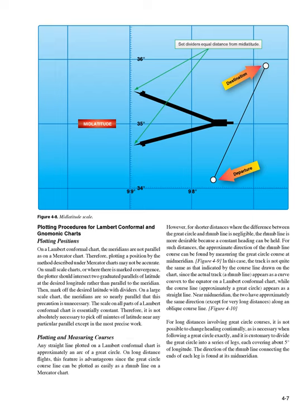The scale on all parts of a Lambert conformal chart is essentially constant. Therefore, it is not absolutely necessary to pick off minutes of latitude near any particular parallel except in the most precise work. Any straight line plotted on a Lambert conformal chart is approximately an arc of a great circle. On long-distance flights, this feature is advantageous since the great circle course line can be plotted as easily as a rhumb line on a Mercator chart.